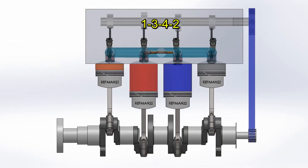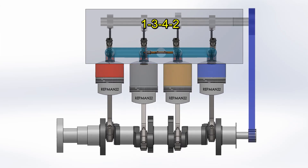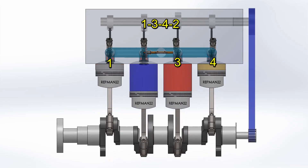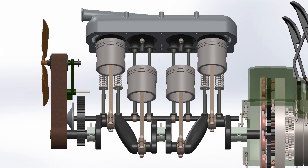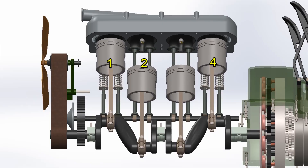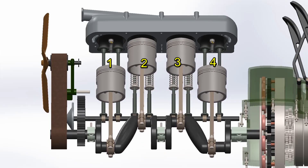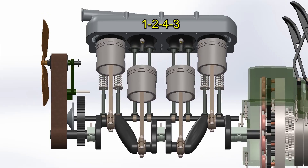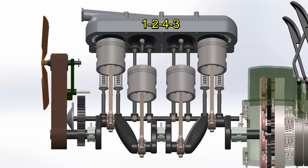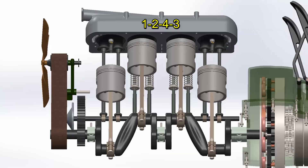The conventional firing order is 1, 3, 4, 2, but the Ford T uses 1, 2, 4, 3. This makes no difference — it is exactly the same but in mirror.